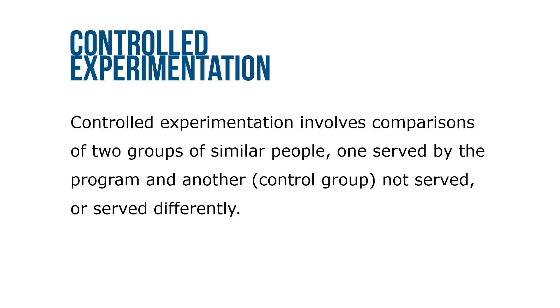Controlled experimentation involves comparisons of two groups of similar people: one served by the program, and the other — the control group — not served or served differently.